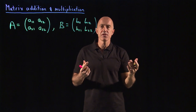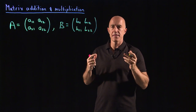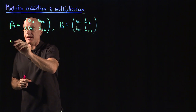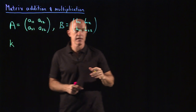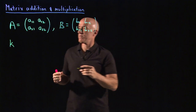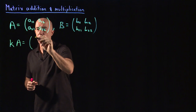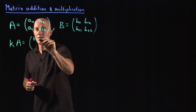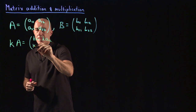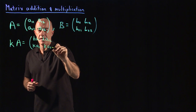Now we need to know how to do arithmetic on these matrices. If K is a scalar — which means basically a number — and we multiply a matrix by a scalar, then we just multiply all of the elements of the matrix by the scalar. That's scalar multiplication of a matrix.